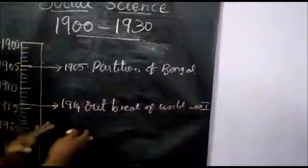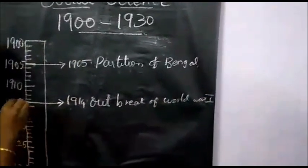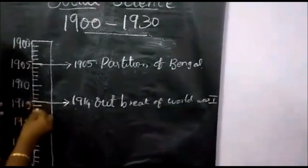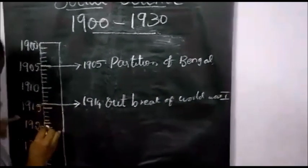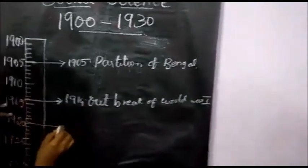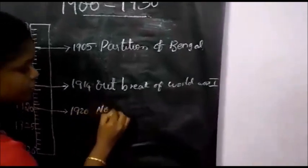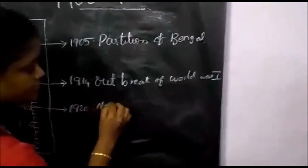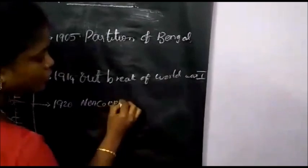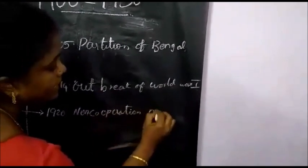Then the next event is 1920. Counting from 1914: 14, 15, 16, 17, 18, 19, 20 — so here is 1920. The event for 1920 is the Non-Cooperation Movement.